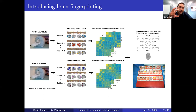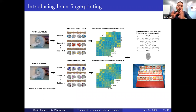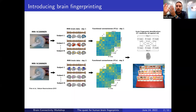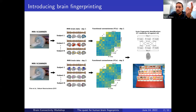Why was this important and striking at the time? I think for two reasons. First, at the time many people in the community — myself included — were just doing group averages of connectomes when comparing, for instance, healthy connectomes versus clinical Parkinson's or Alzheimer's connectomes, and this came at the cost of potentially losing important individual information.